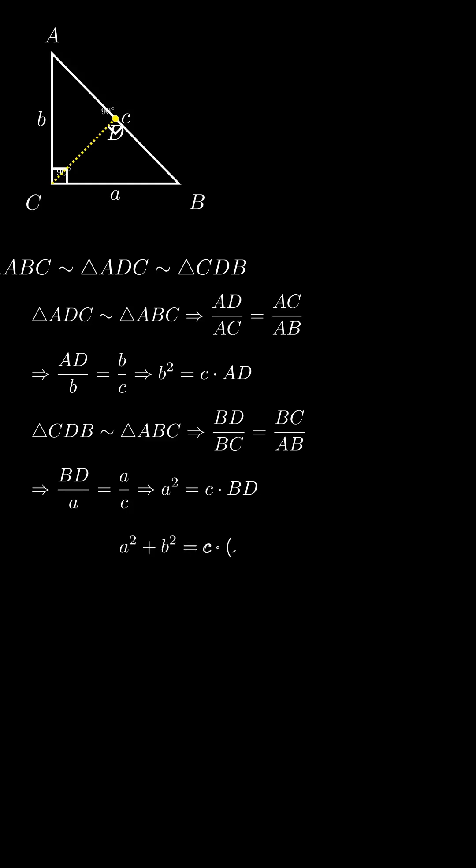Now, adding both results, a² plus b² equals c times AD plus c times BD. But AD plus BD is simply AB, which equals c. Therefore, a² plus b² equals c².